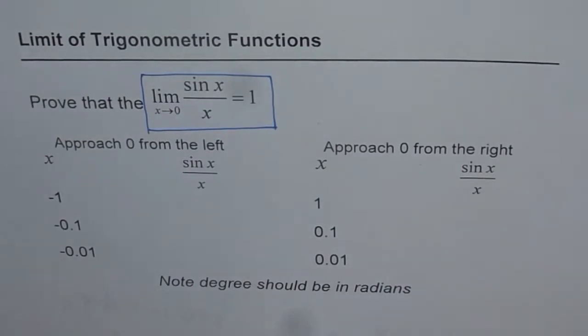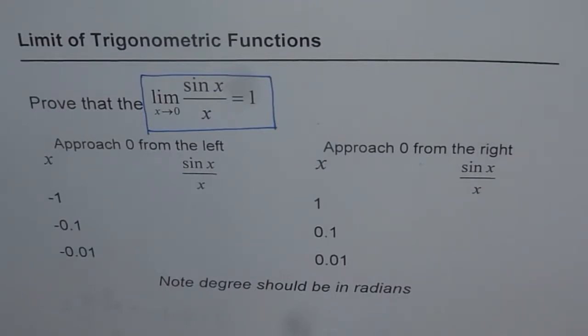So that is a big question and the most important. Once you know that limit of sin x over x when x approaches 0 is 1, then you can solve the rest of the problems on trigonometric limits. Now how to prove this? This is right from the definition.